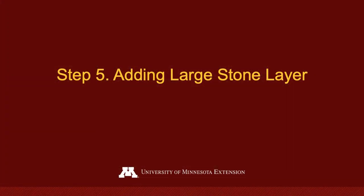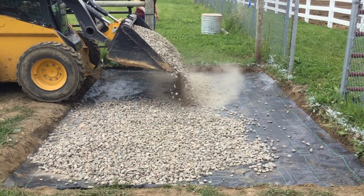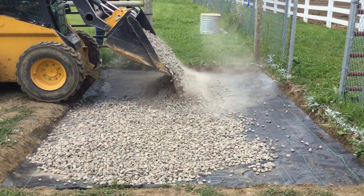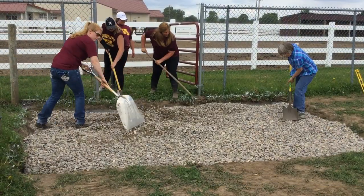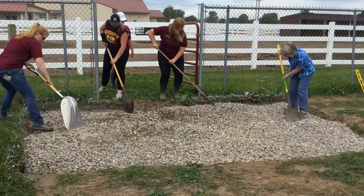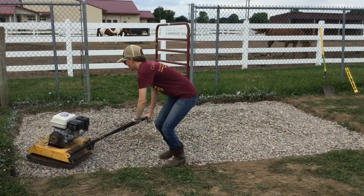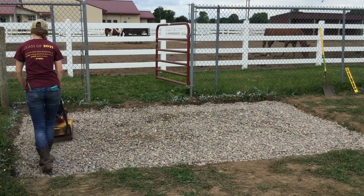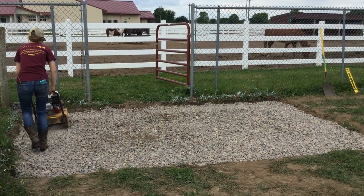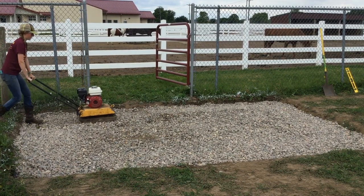Fill the high traffic pad with your larger stone product to a four-inch depth. This is your second layer of the high traffic pad. Pack the layer with a vibratory plate compactor. If a plate compactor is not available, you can also use a commercial roller or larger farm equipment to pack the stone layers. Compacting is a key step to ensure you have constructed a solid base and will minimize settling over time.